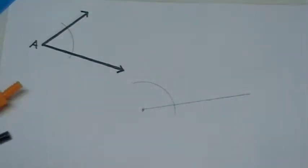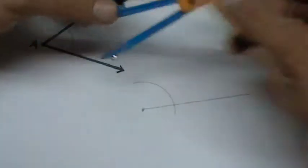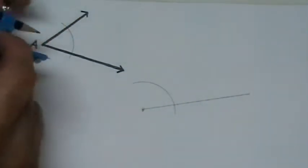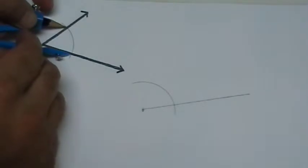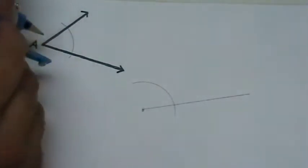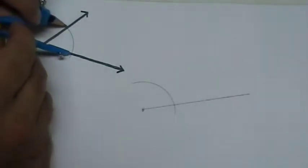To do that we're going to bring back the compass. We're going to open it up to the distance from these two intersection points on the original angle.